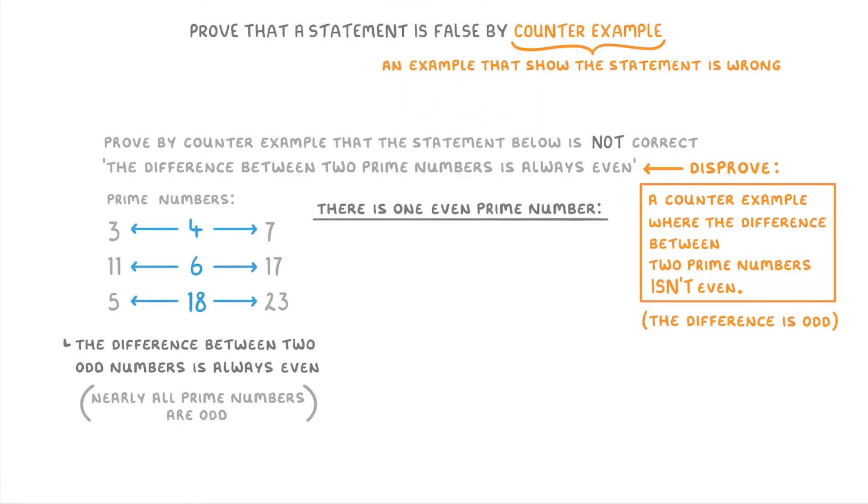However, remember that there is one even prime number, which is 2. And if you had tried to find the difference between 2 and any other prime number, like the difference between 2 and 5, then it would have given you an odd number, in this case 3.